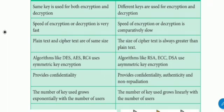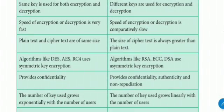The algorithms used in symmetric are DES, AES, and RC4. In asymmetric, algorithms used are RSA, ECC, and DSA. The fifth point: symmetric provides confidentiality, while asymmetric provides confidentiality, authenticity, and non-repudiation. Regarding number of keys: in symmetric, the number of keys grows exponentially, but in asymmetric, the usage of keys grows linearly.